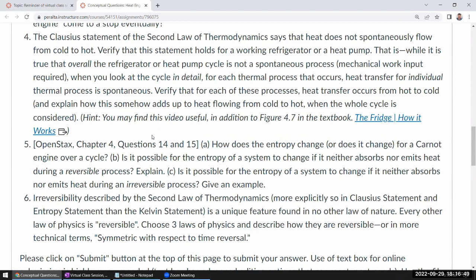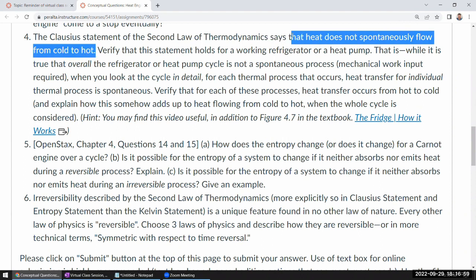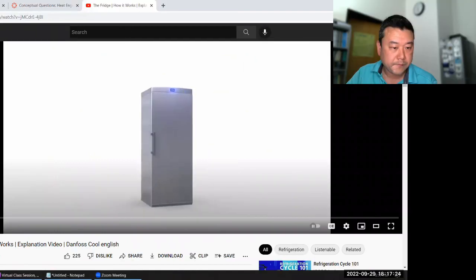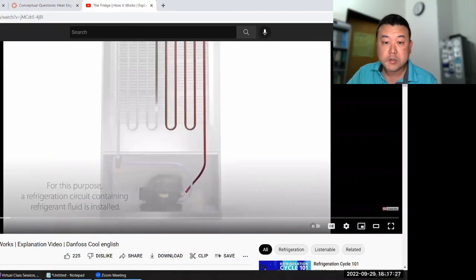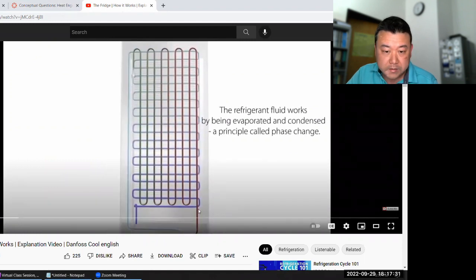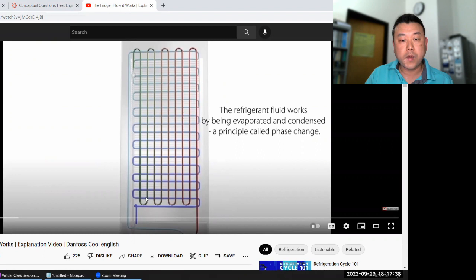For Clausius, the statement of the second law of thermodynamics says that heat does not spontaneously flow from cold to hot. It's kind of surprising to me that that needs to be stated as some statement of law, but anyways. Verify that this statement holds for a working refrigerator. That's fairly interesting. I think the video is helpful. Let me go to the video and I can show you the part where heat transfer occurs. This is the back of the radiator.